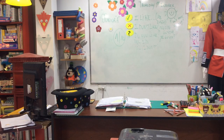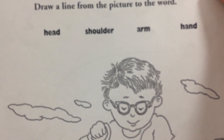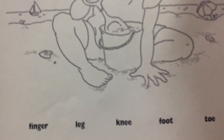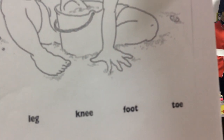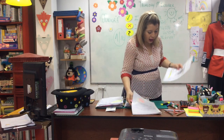And we go to page 59, and we are going to match. Head — cabeza. Shoulder — los hombros. Arm — brazo. Hand — mano. Finger — los dedos de las manos. Leg — las piernas. Knee — la rodilla. Foot — un pie. And toe — los dedos de los pies. You are going to repeat the parts of the face once and the parts of the body once too.